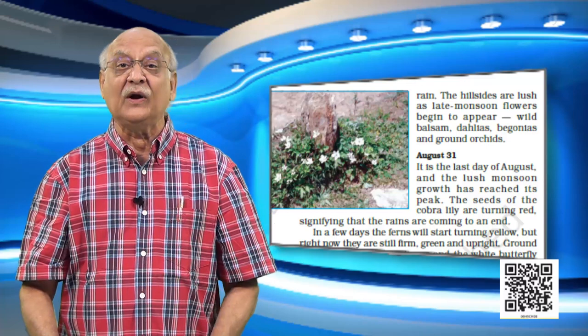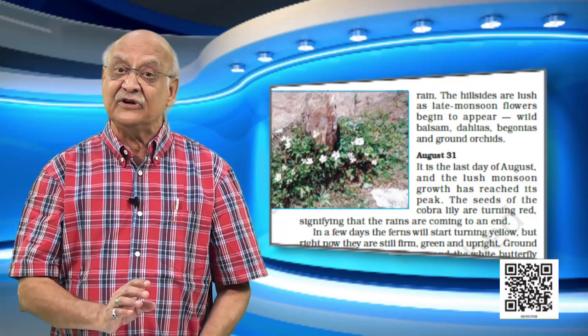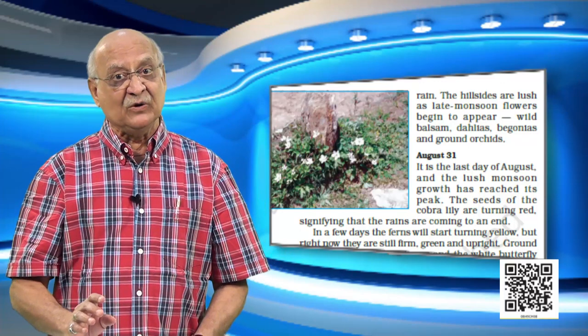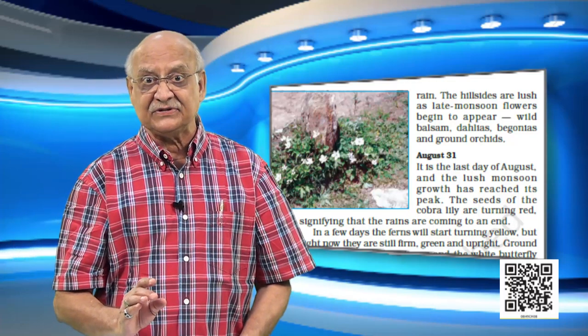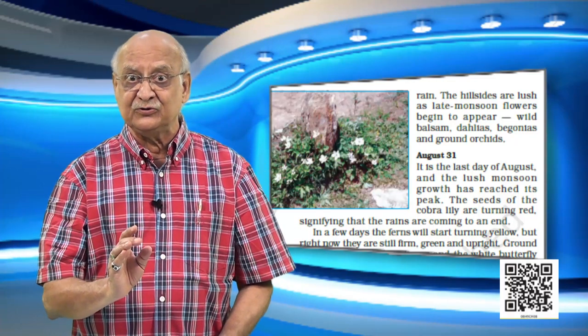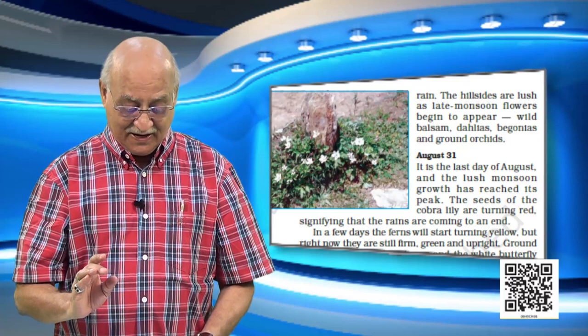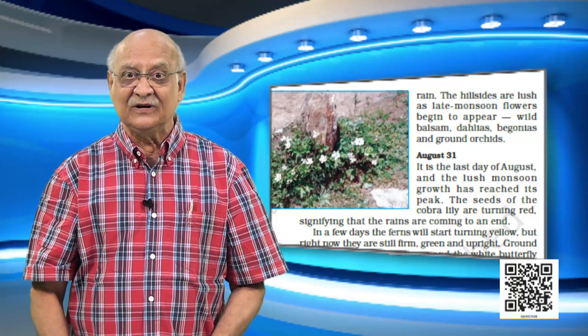Turn the page over — you will see a beautiful picture with lots of flowers that have grown because of the rain. The interesting thing about rain now in August is that the rains are almost ending. There is sunlight sometimes, and so when there is sunlight and there is rain, you also see a few new things growing. Ruskin Bond, at the top of page 116, notices that the hillsides are full of flowers — wild balsam, dahlias, begonias, and ground orchids.